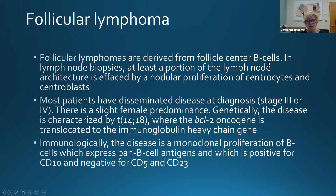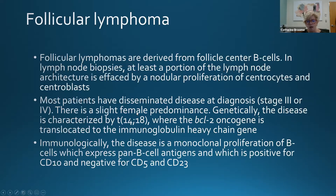Follicular lymphoma is derived from follicle center B cells, with nodular proliferation of centrocytes and centroblasts effacing nodal architecture. Most people have fairly disseminated disease at diagnosis — usually stage 3 or 4. Unlike other low-grade lymphomas, there's a very slight female predominance. Genetically, there is a t(14;18) translocation where the BCL2 oncogene is translocated to the immunoglobulin heavy chain. Immunophenotype: pan-B cell antigens, CD10 positive, but negative for CD5 and CD23.